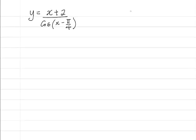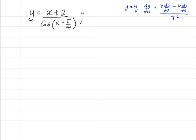The quotient rule says that if y is equal to u over v, dy by dx would be equal to v du by dx minus u dv by dx, all over v squared. So let's apply it.